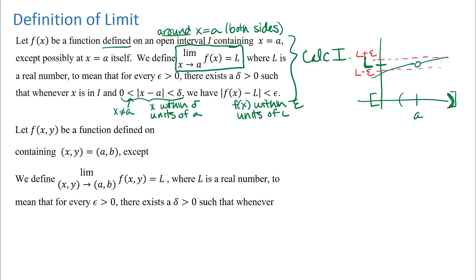...we are guaranteed that the function outputs will be within epsilon units of L. I've drawn the epsilon region above and below L on my picture. What I want to think about is how far away from x equals a I can go and still be ensured that the function outputs stay in that interval between L minus epsilon and L plus epsilon. I put dots where the function appears to go outside that interval, and use that to determine my delta distance. Since the function may not be symmetric, delta is the smaller of the two sides, forcing the outputs to stay within that strip.